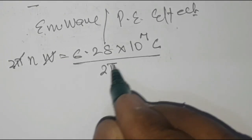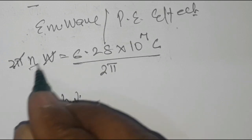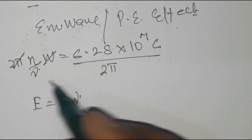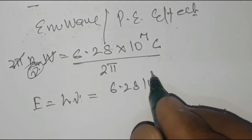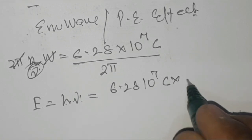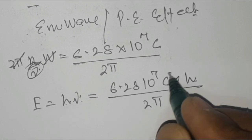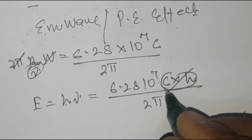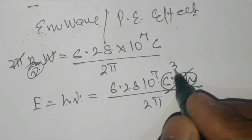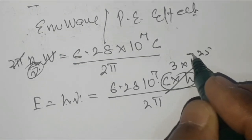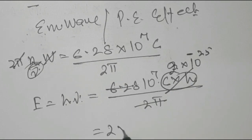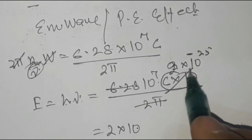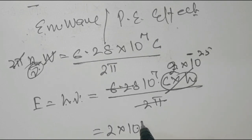So ν = 6.28×10⁷c / 2π. The energy is E = hν = hc × (6.28×10⁷/2π). Using hc = 2×10⁻²⁵ J·m, and 2π cancels, we get E = 2×10⁻²⁵ × 10⁷ × c. Substituting c = 3×10⁸ gives E = 2×10⁻¹⁸ joules.